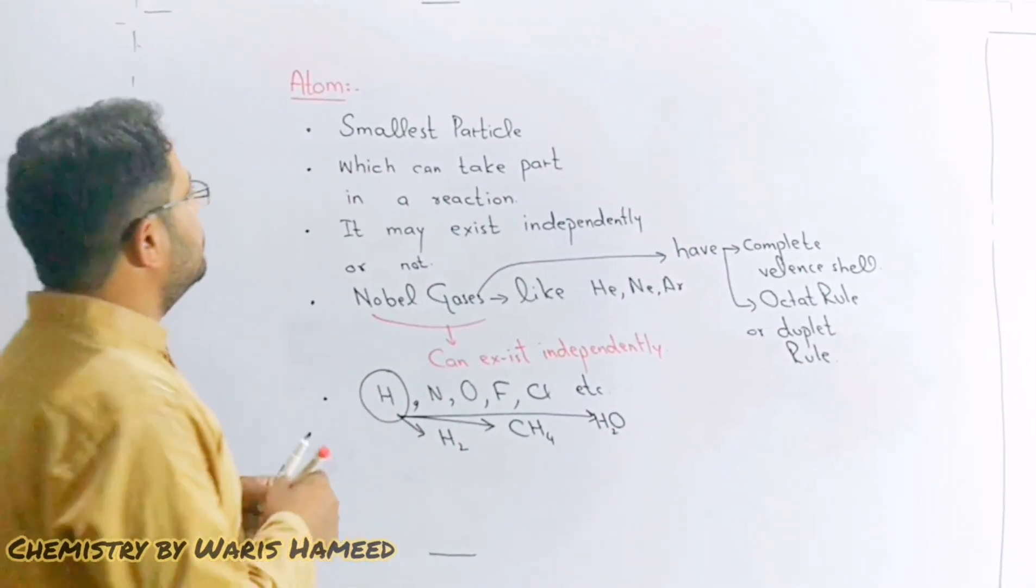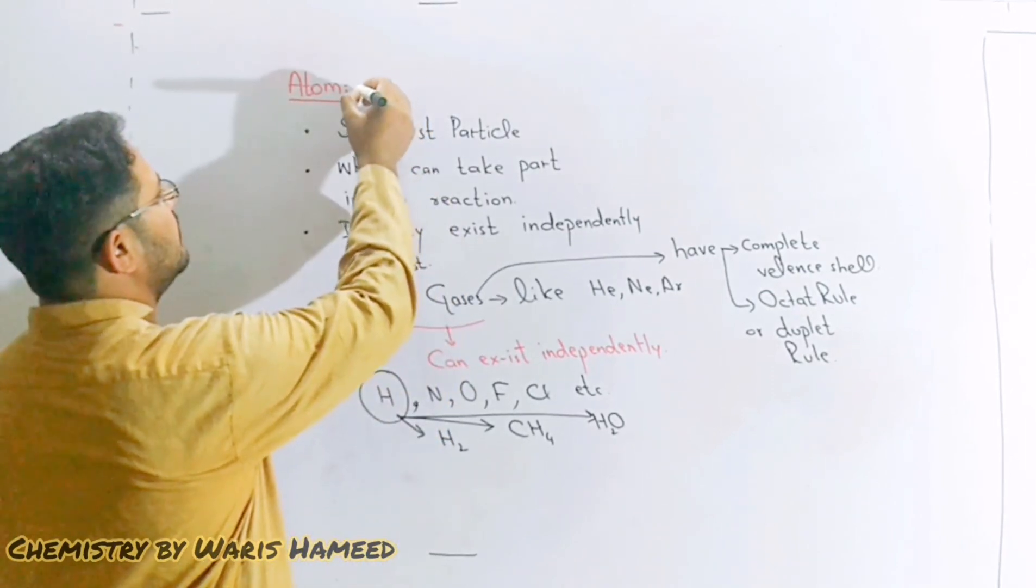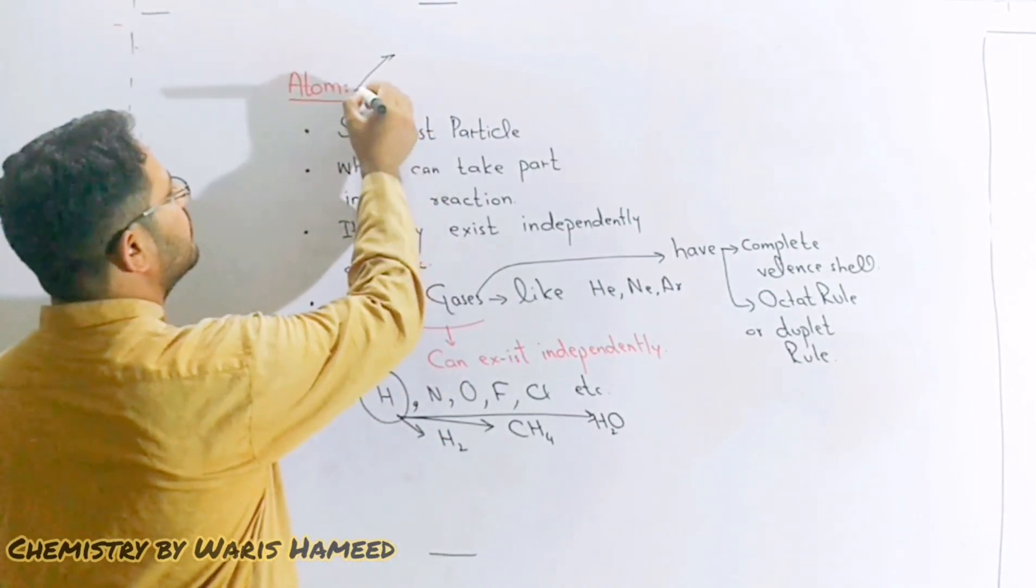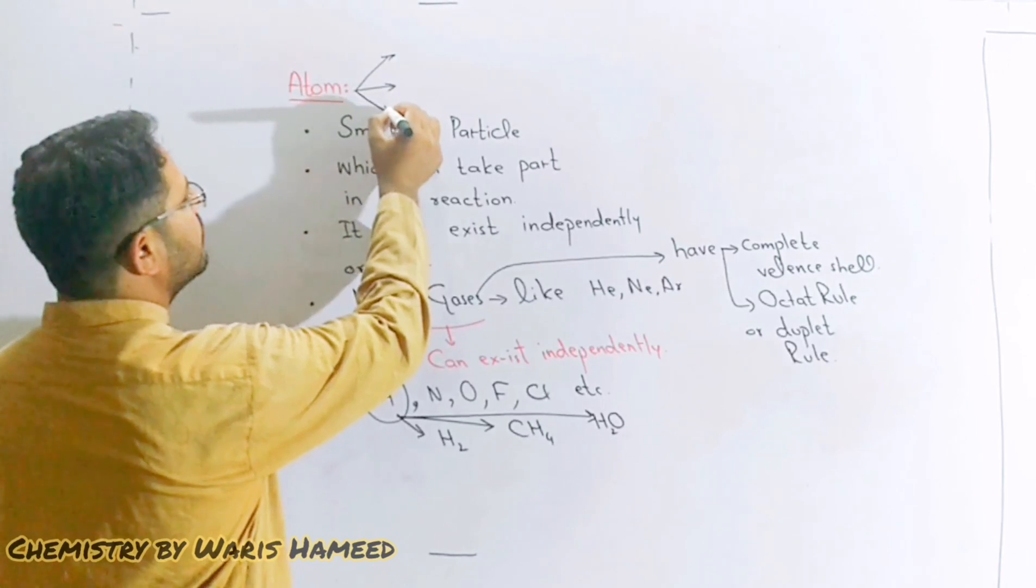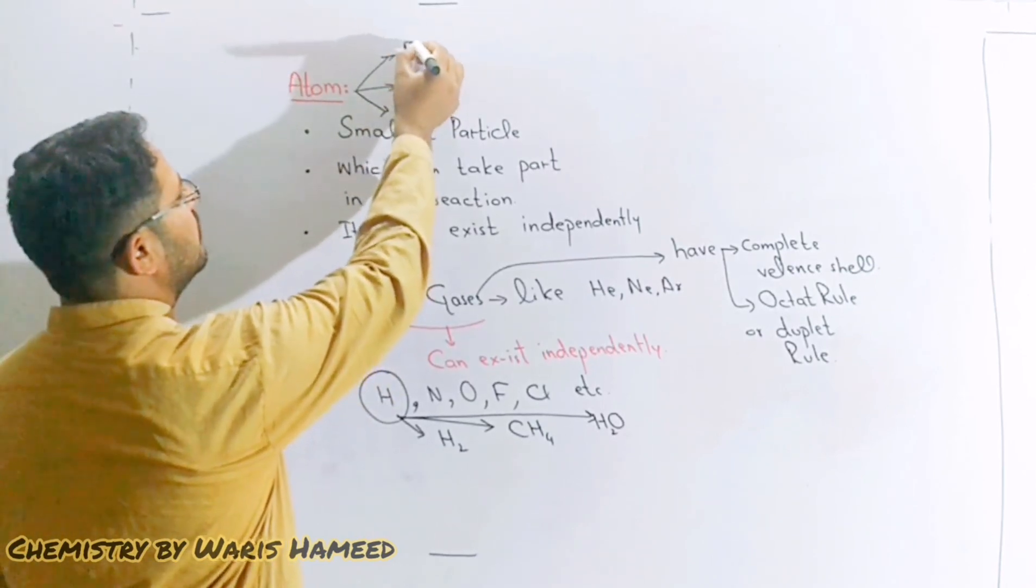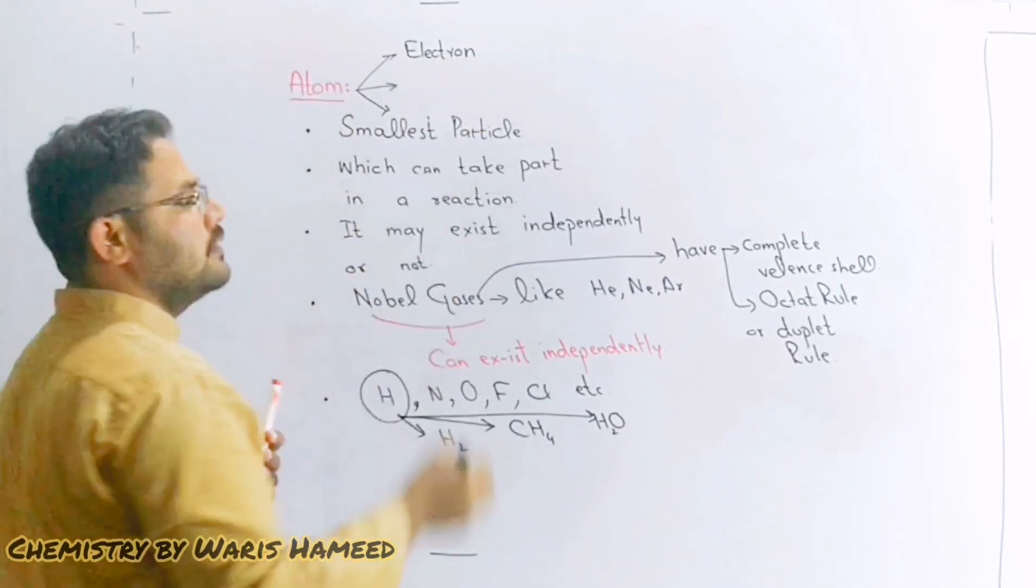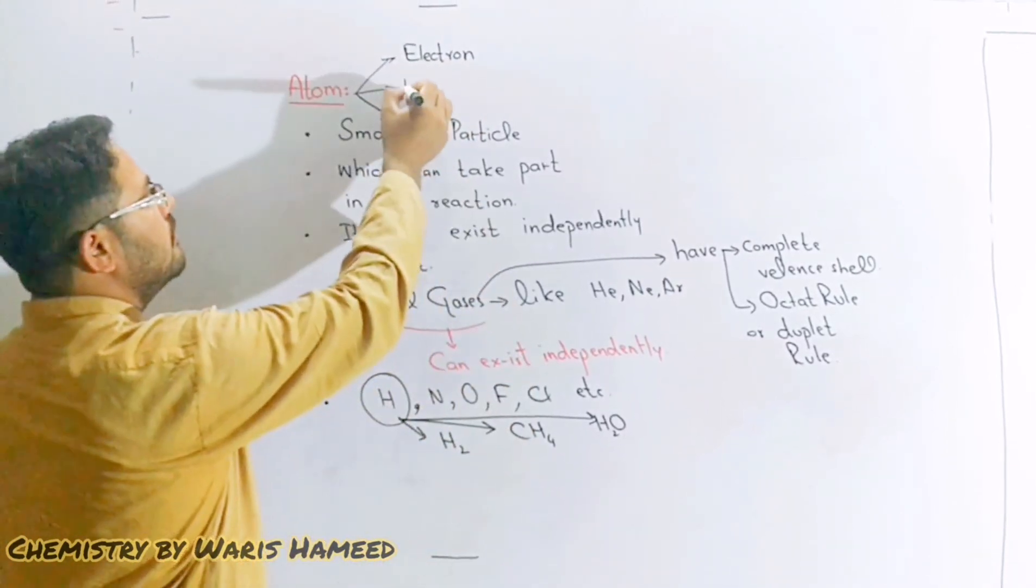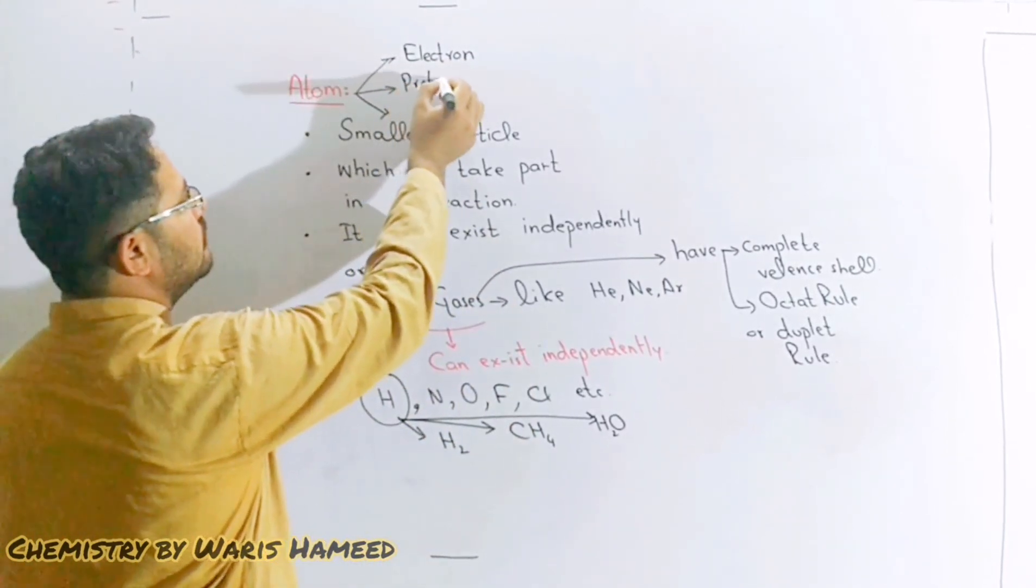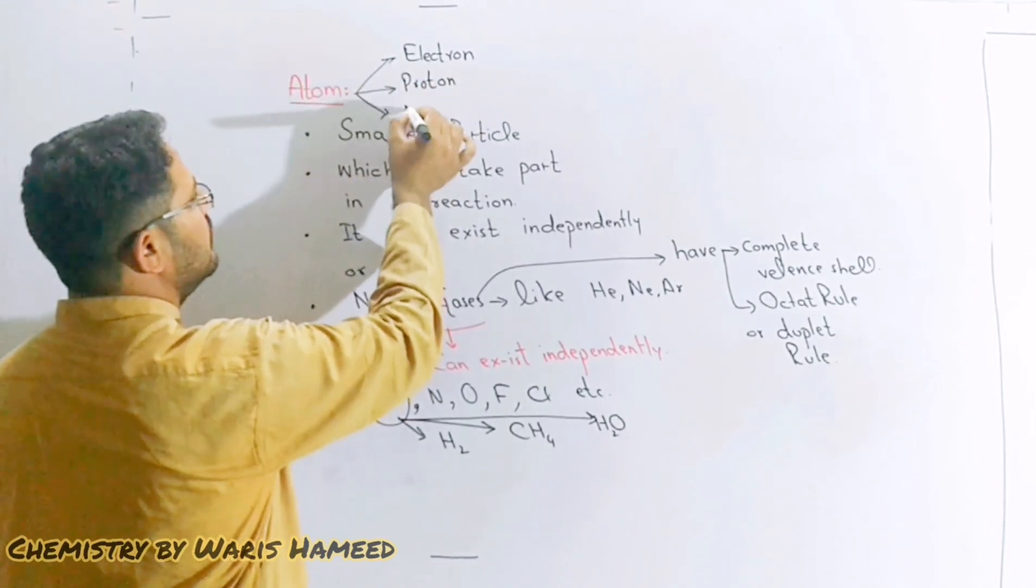Atom have three fundamental particles. First is electron, second is proton, third is neutron.